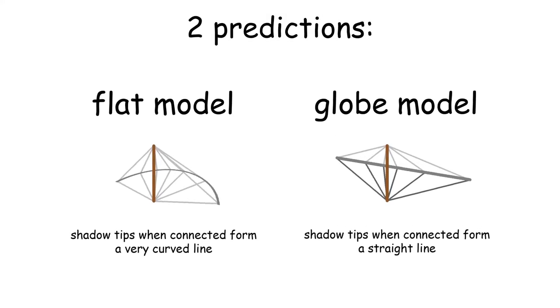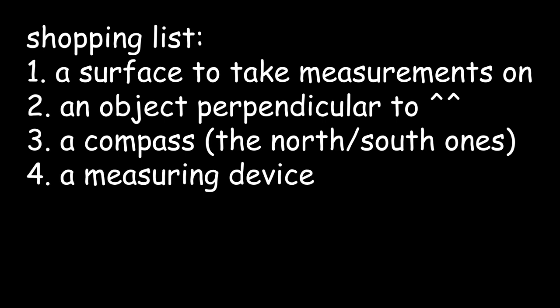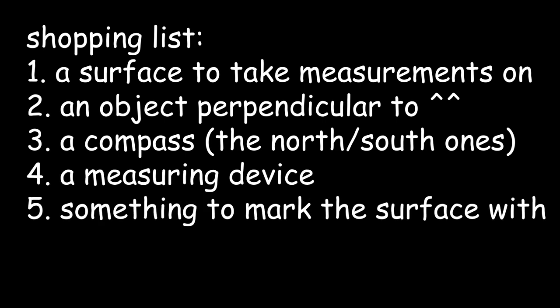So now that we have two different predictions with two different models, we can see which prediction actually matches reality, or if either of them even do. To do this, we need a surface to take measurements on, an object perpendicular to the surface, a compass, a measuring device, and ideally something to mark the surface with.